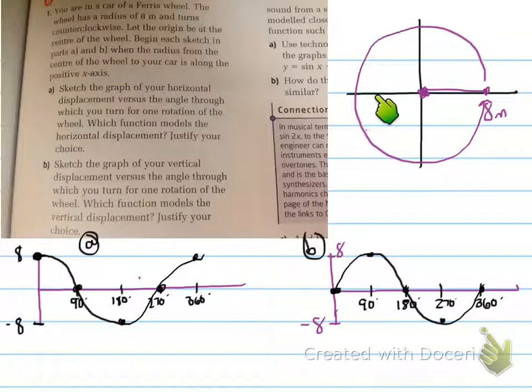Then as you complete the turn all the way down, you're coming back to 0 and then back again positively. So that's why these values go from 8 downwards to negative 8 and back up to 8. So this models the cosine function.